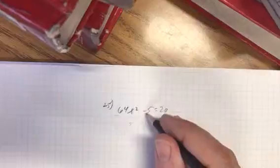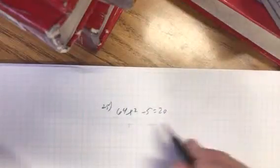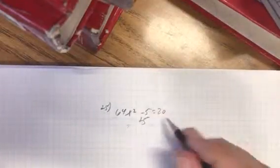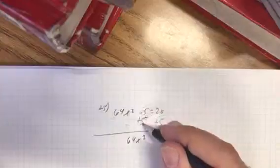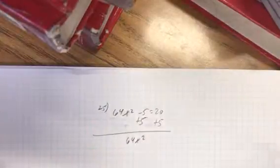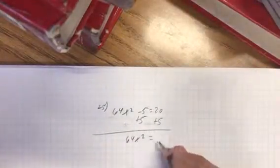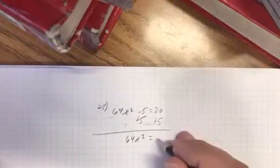First, obviously we're going to get rid of this. We want the constant all in one term. So, add 5 and use inverse operations to solve for that. So, now you have 64x squared, negative 5 plus 5 is 0, cancels out, which was the point, equals 25.